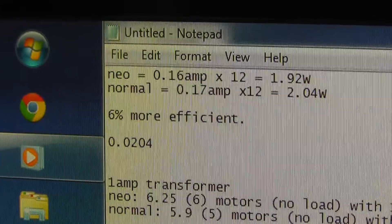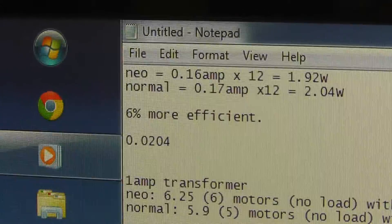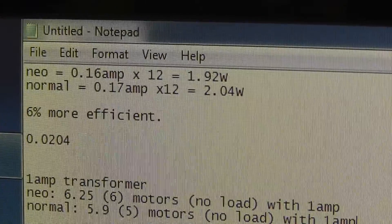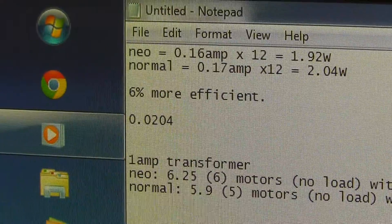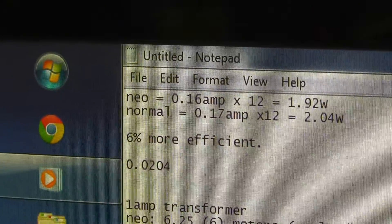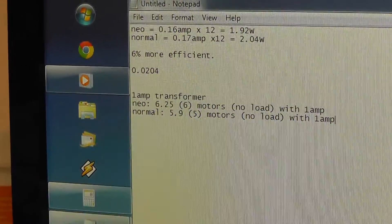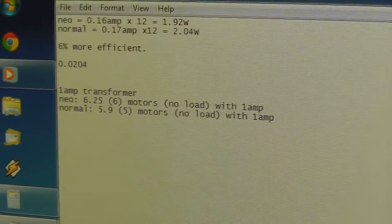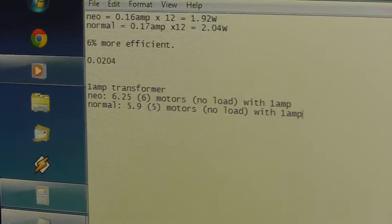Okay, so as you see there, the neo magnet pulled 0.16 amps. We times that by 12, that gives us 1.92 watt. The normal magnet from the old original Triang motor pulled 0.17 amps. Again, times by 12, that gives you 2.4 watts, which is higher, like we expected. And that's 6% higher. In other words, this magnet, the neo one, is 6% more efficient. And then I did a little calculation there. So if we're using a 1 amp transformer, the neo magnet, you can use 6 of those motors. As long as there's no load with 1 amp, and that'll run just fine. The normal one, you can't quite run 6, but nearly, with no load with 1 amp. So you can only run 5.